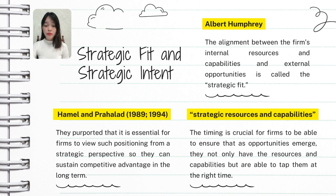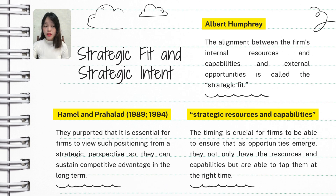Strategic resources and capabilities refers to the important assets, skills, and strengths a company uses to compete in the market. Having these resources is essential, but timing plays a huge role in determining success. It's not enough for a business to just have the right tools — it also needs to act at the right moment. If a company doesn't take advantage of an opportunity when it arises, even the best resources might go to waste. For example, a tech company that has the ability to create a groundbreaking product but waits too long to launch it risks letting competitors get there first. On the other hand, launching too early without being fully prepared also risks failure.